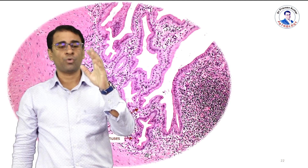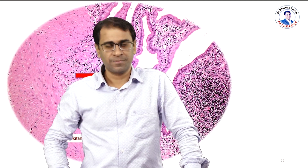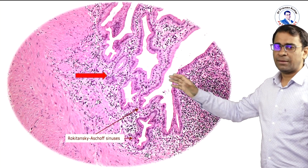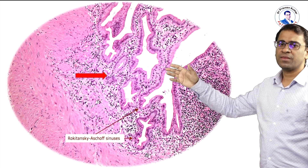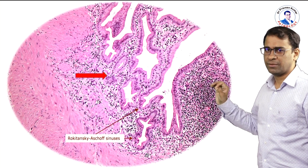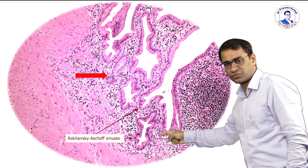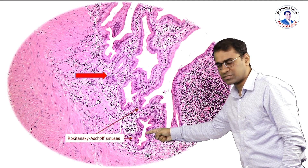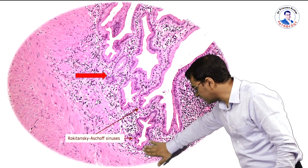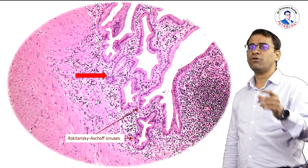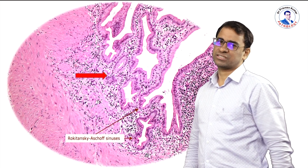These cysts are called Rokitansky-Aschoff sinuses. The findings of chronic cholecystitis are: number one, the lining epithelium may be destroyed; number two, dense lymphocytes in the mucosa; and number three, Rokitansky-Aschoff sinuses. Look at this sinus here — this is a Rokitansky-Aschoff sinus, and this is what you see in a case of chronic cholecystitis.